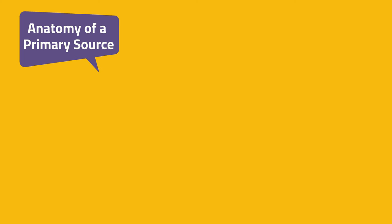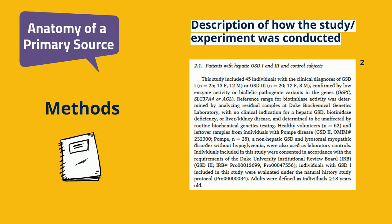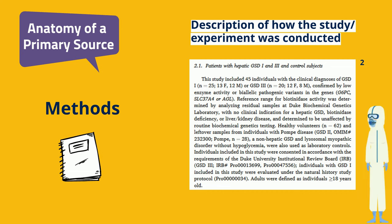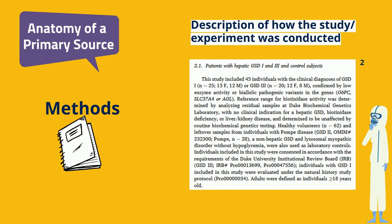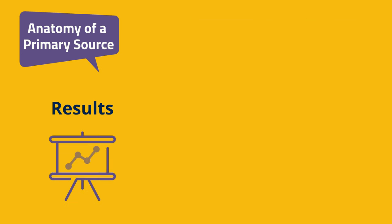So what makes a source primary? Well, it usually has these features. A detailed methods section — a step-by-step description of how the study was conducted. This allows other scientists to replicate the experiment if they want to. And a detailed results section.